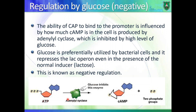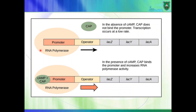How does glucose regulate transcription? It binds to and inhibits an enzyme known as adenyl cyclase. Adenyl cyclase is the enzyme that converts ATP to cyclic AMP. If there is glucose, glucose inhibits adenyl cyclase, so there is no more conversion of ATP to cyclic AMP, meaning CAP cannot bind upstream of the promoter and cannot activate RNA polymerase. There may be some transcription but it is not very efficient compared to when CAP is bound.